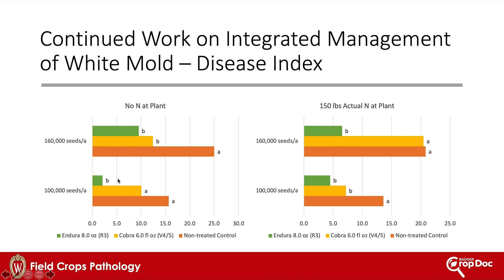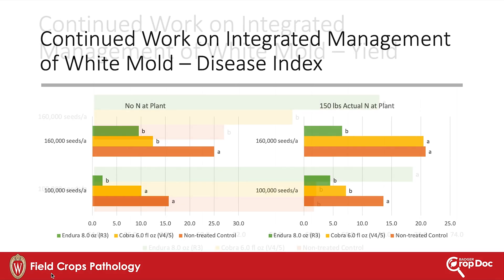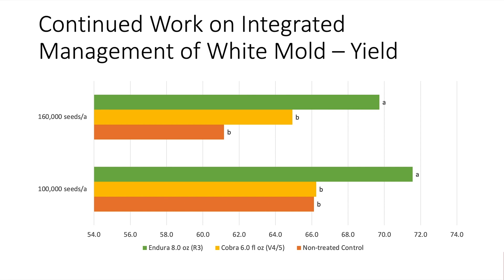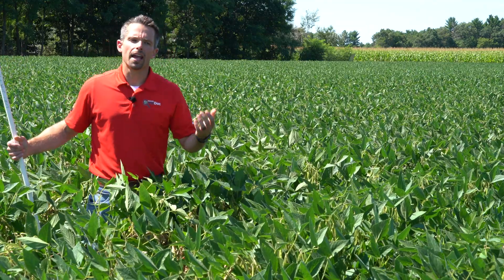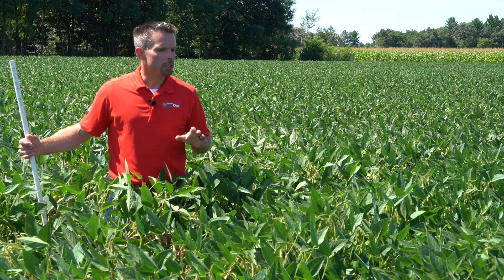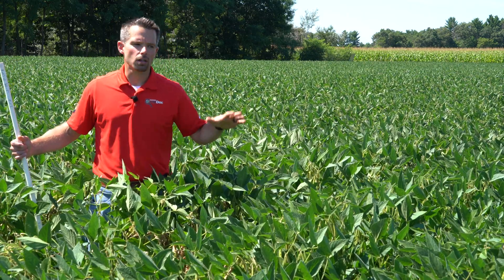In the low fertility situation, we get a nice reduction in white mold where we have 100,000 seeds per acre, and a further reduction where we apply Endura at the R3 growth stage, which seemed to be optimum timing in this particular situation. Looking at yield, we actually see higher yields where we have 100,000 seeds per acre planted compared to 160,000 seeds per acre when we apply Endura at R3. Thus, we're recommending that folks consider dropping seeding rates in environments where they have high white mold pressure. Spend some time also studying variety trials and variety ratings — while we don't have varieties immune to white mold, we do have varieties with decent resistance that you can also layer on top.